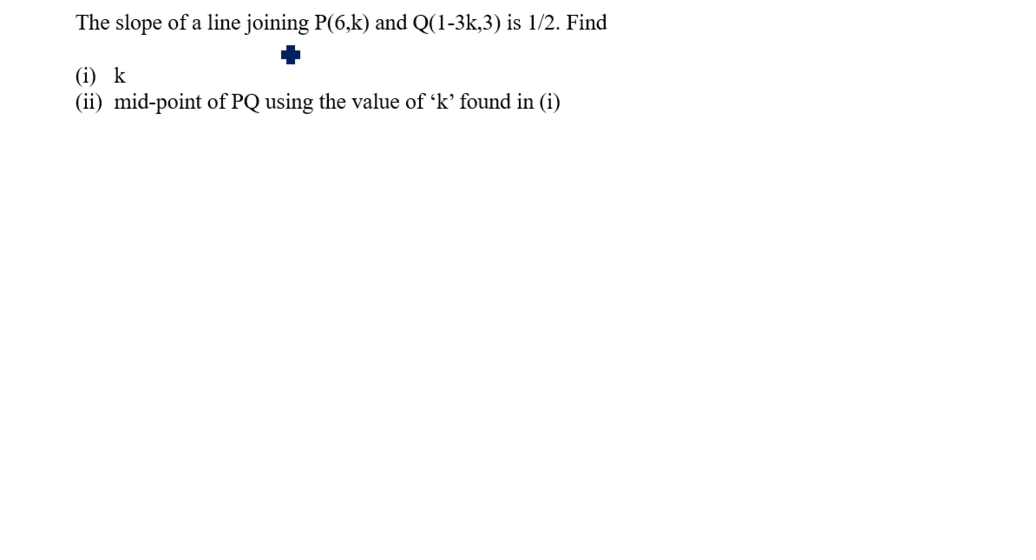The slope of a line joining P(6,k) and Q(1-3k,3) is 1/2. Find k. We need to find this k value and the midpoint of PQ. We need to find the midpoint of PQ value.